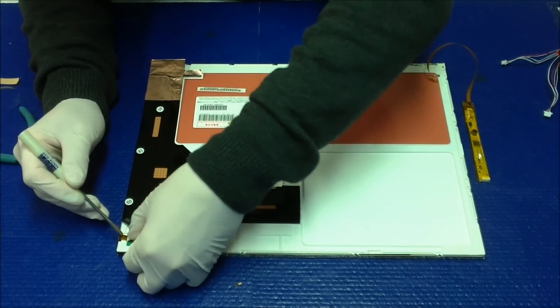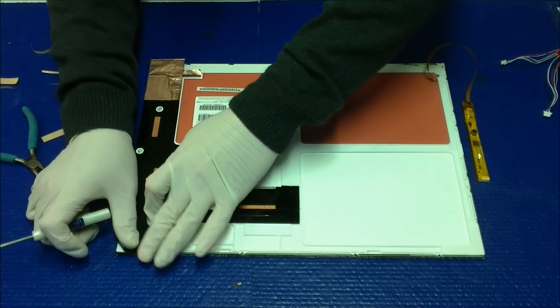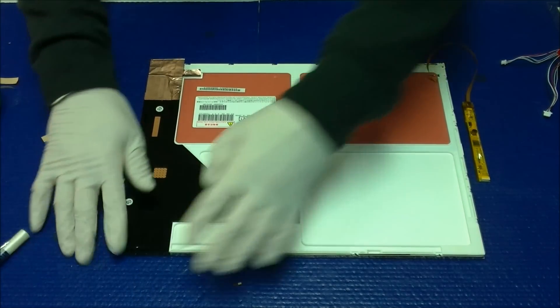Put the tape cover on it. That would be the whole procedure for this Hitachi screen. Thank you for watching.